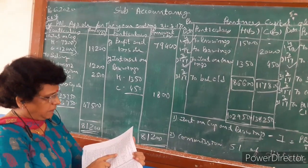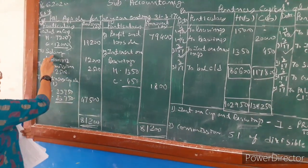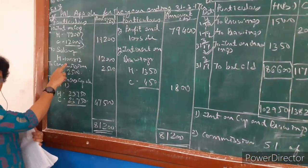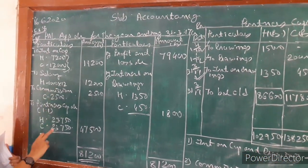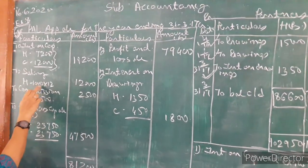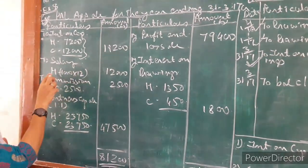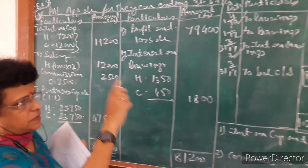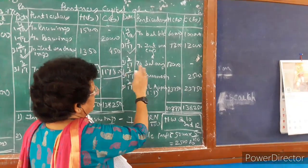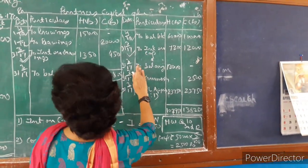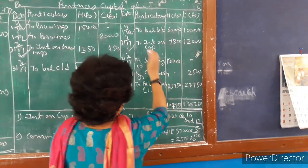1,000 per month is to be paid to Garupal for his active role in the firm. Since Garupal is an active member, he is entitled to get salary over and above profit. So 1,000 per month for 12 months becomes 12,000. It is income only for one partner, Garupal, so it will go on the credit side of his capital account — by salary to Garupal, 12,000 rupees on 31st March.